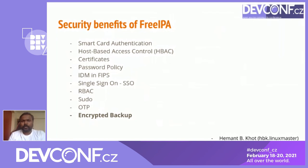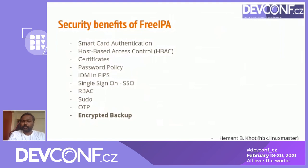Encrypted backup: everyone takes backups to recover from crashes, power failures, or hardware failures, but what if those backup files are accessed by a third party? With FreeIPA you can encrypt your backups. Install the prerequisite packages, do some configuration, set a GPG passphrase, and using `ipa-backup --gpg` you can encrypt your Identity Management backups.